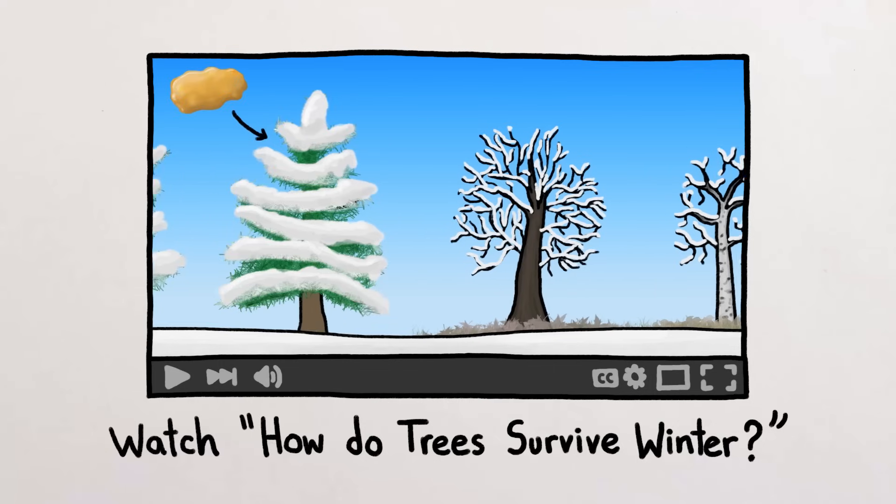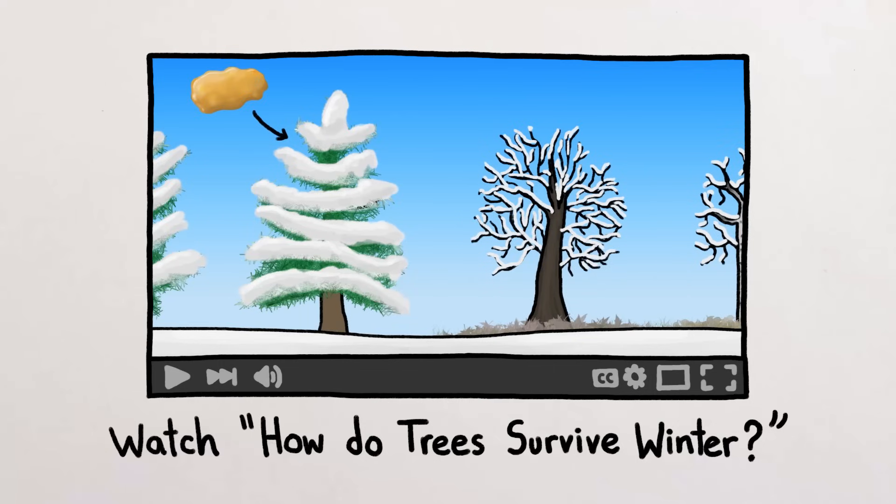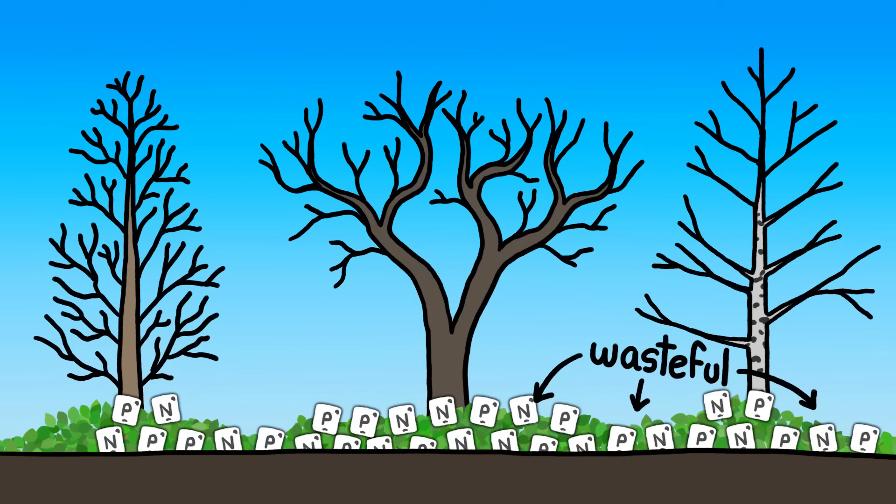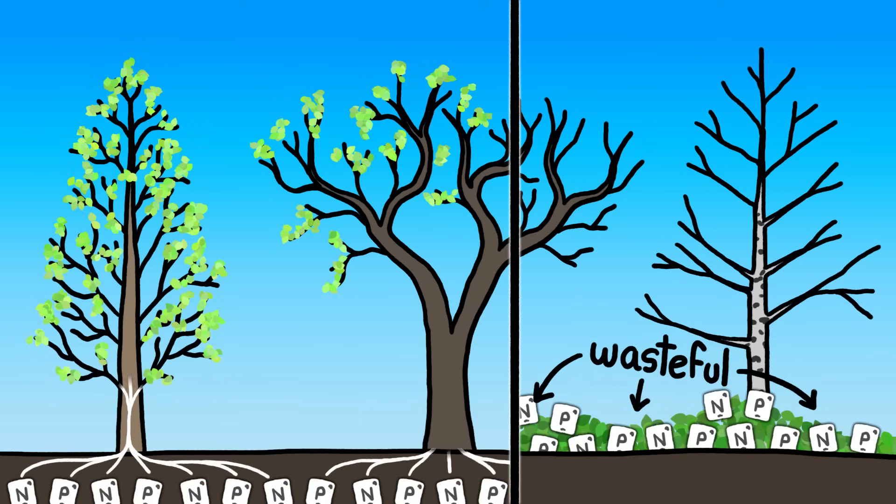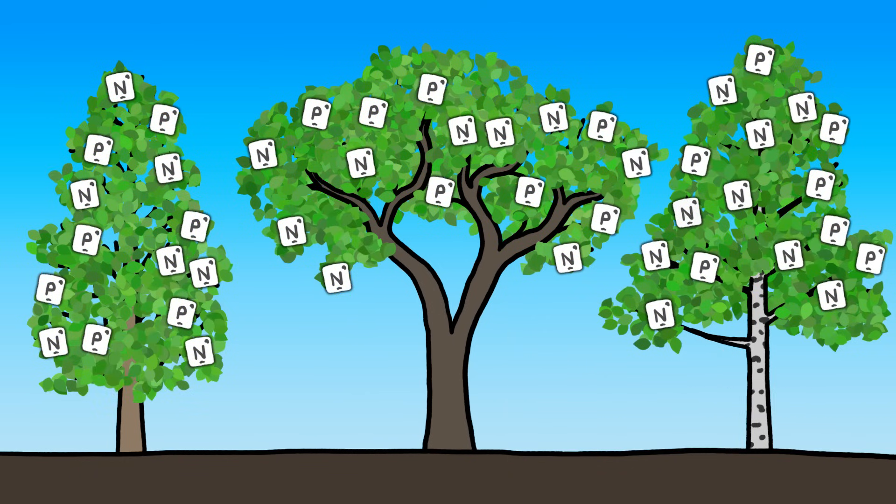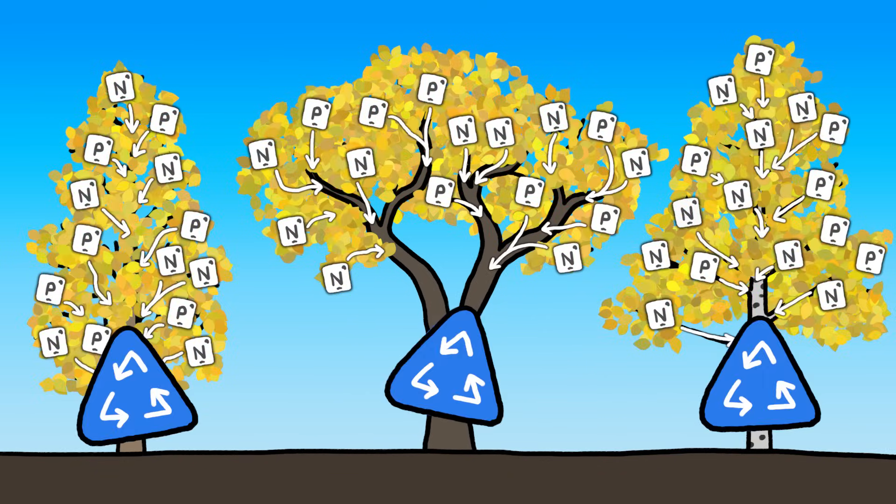Deciduous trees drop their leaves each year to avoid the high cost of winterizing them, but this seasonal shedding would be too wasteful to be worth doing if the trees lost all the valuable nutrients they laboriously extracted from the soil to build their leaves earlier in the year. So each fall, deciduous trees recycle their leaves before dropping them.